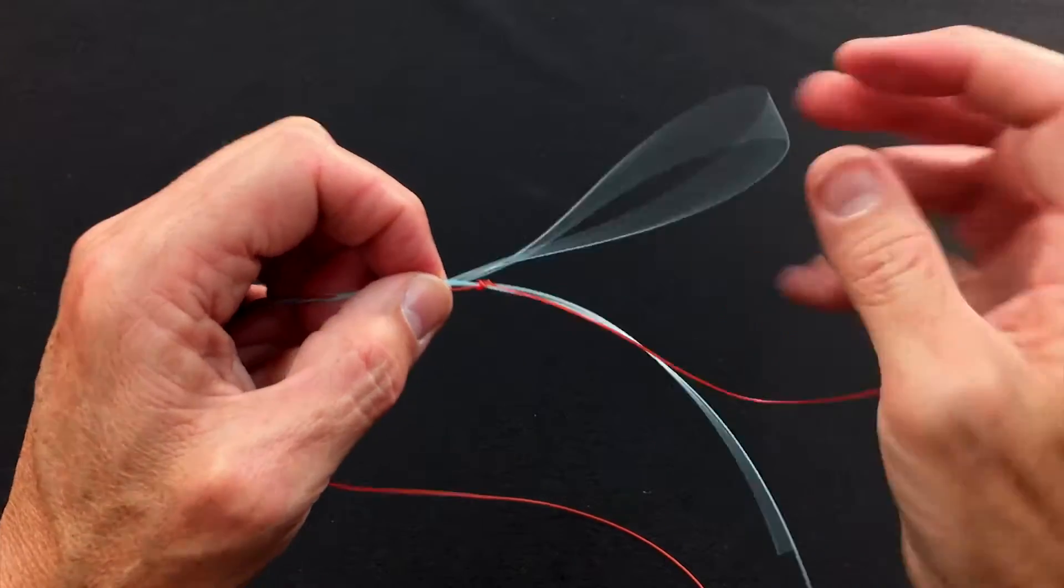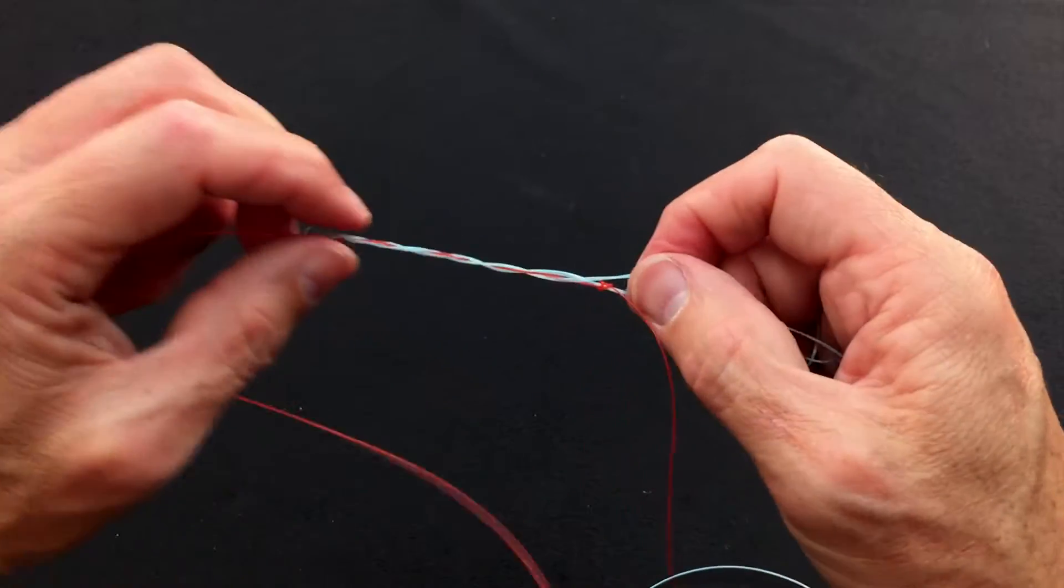Take out the slack. And that is the Slim Beauty tied.